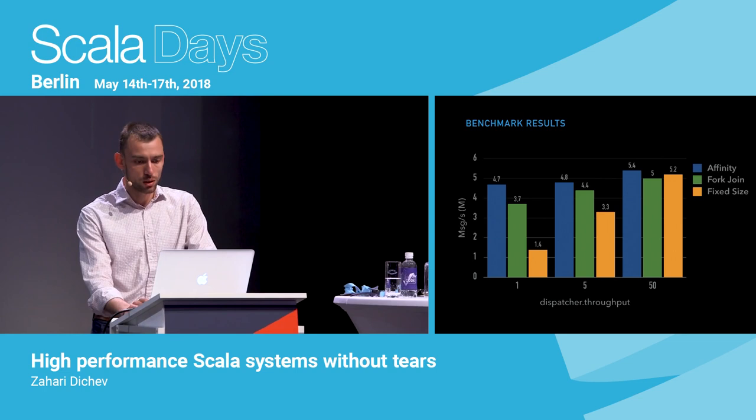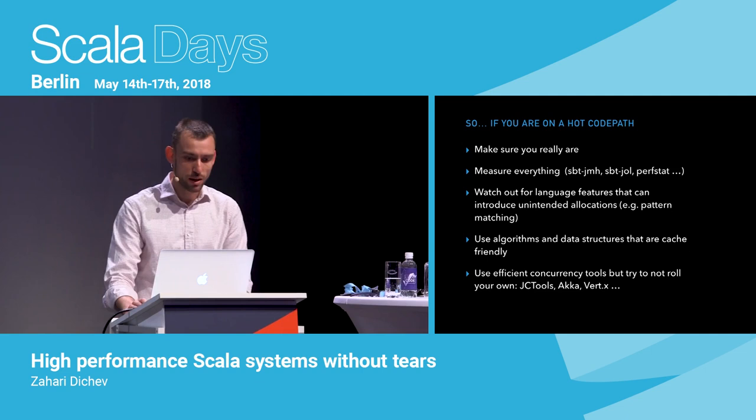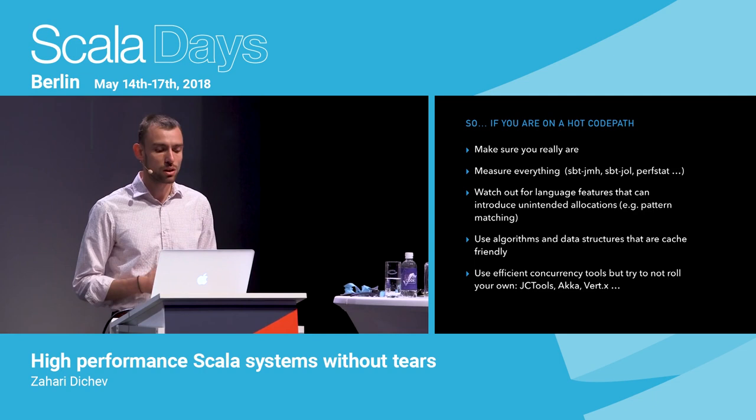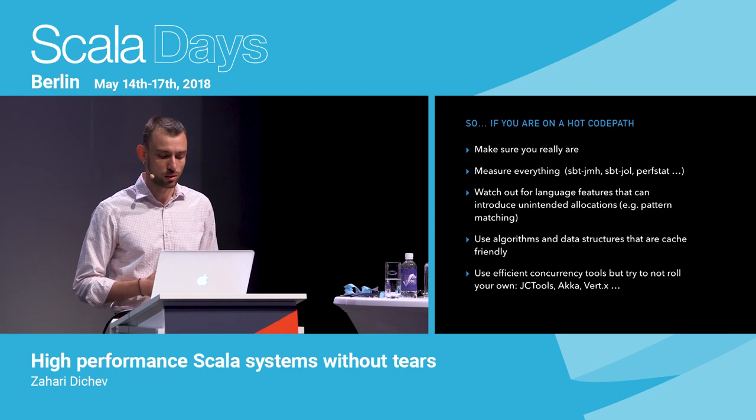To summarize: if you're on a hot path, make sure you measure. Use SBT-JMH, Java Object Layout, perf stat. Watch out for language features that increase object instantiation such as pattern matching. Use cache-friendly algorithms and data structures. Use efficient concurrency tools, but try not to roll your own — there are libraries like JCTools, Akka, and Vert.x that can help.